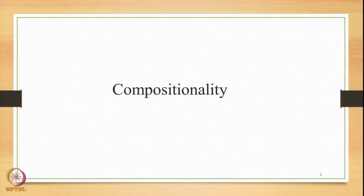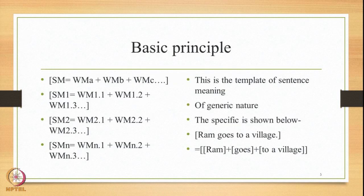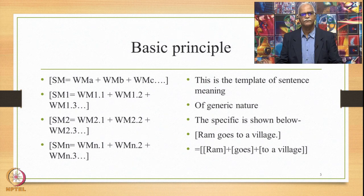Now we are studying the feature of compositionality. We noted that compositionality, as per the description available in the Paninian grammatical tradition, is at three levels: Artha (meaning), word, and svara (accent). We shall study them one by one. In this lecture, we are focusing on the compositionality of the Artha. The basic principle of this compositionality of Artha is that sentence meaning — referred to on the left hand side of this slide as SM — is composed of word meanings, referred to as WMs.